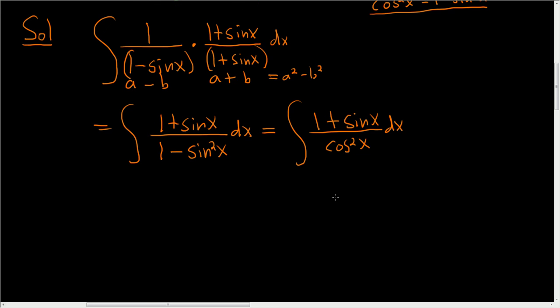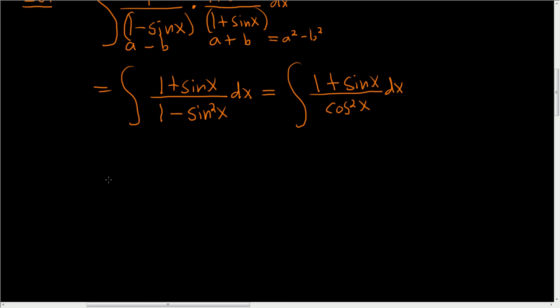Now in the next step, we'll break this up into two integrals. So this is equal to the integral of 1 over cosine squared x dx plus the integral of sine x over cosine squared x dx.